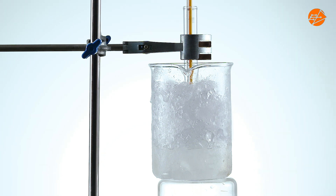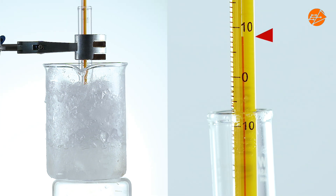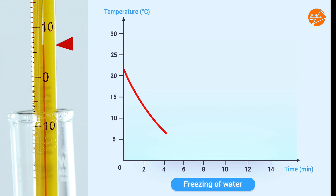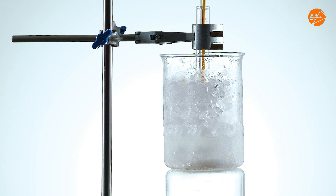The water in the test tube continues to lose heat, and this causes the temperature to decrease. The temperature of the water in the test tube is dropping below 10 degrees Celsius. Let's look at the graph — the graph is showing a downward trend.